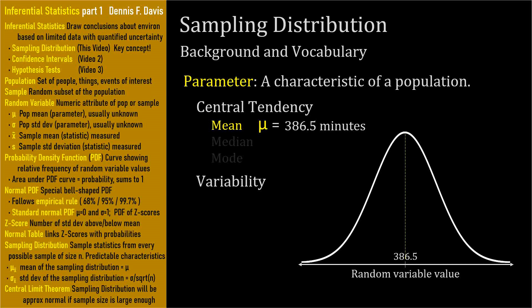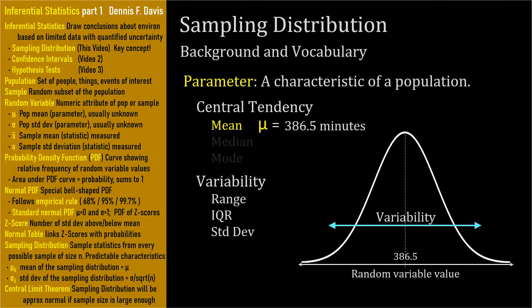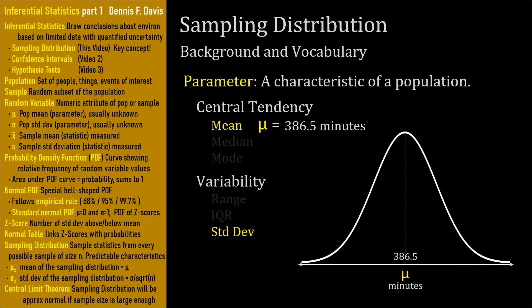Measures of variability you'll cover include the range, interquartile range, and the standard deviation. Measures of variability tell us about the dispersion or spread-outness of the random variable values. The one we'll use most often in inferential statistics is the standard deviation. To review standard deviation, we start with variance. We get the variance by taking each individual random variable value x sub i, subtracting the mean mu, squaring all of these differences, and taking their average by adding them up and dividing by the population size N.